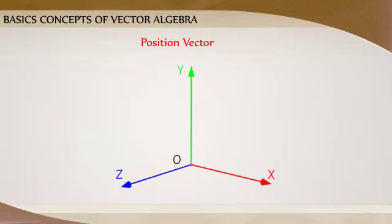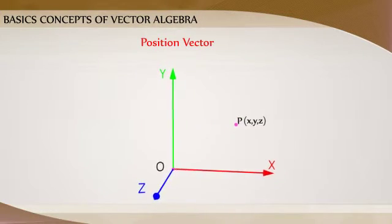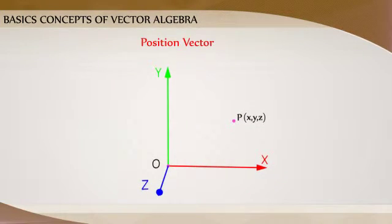Position Vector: Consider a point P in space having coordinates x, y, z. Let O be the origin. Then the vector OP having O as its initial point and P as its terminal point is called the position vector of the point P with respect to O.